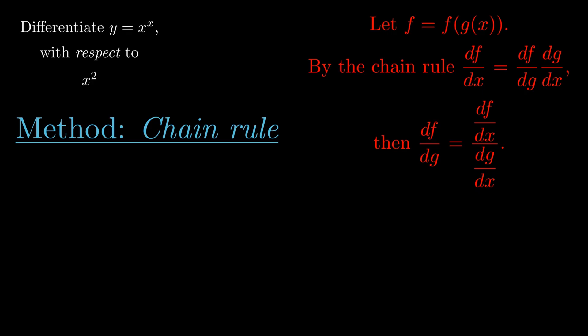The derivative of f with respect to g is equal to the derivative of f with respect to x, divided by the derivative of g with respect to x. This is excellent because in theory we can now differentiate any function with respect to another function using this formula, and all that's left to do is choose our f and g.